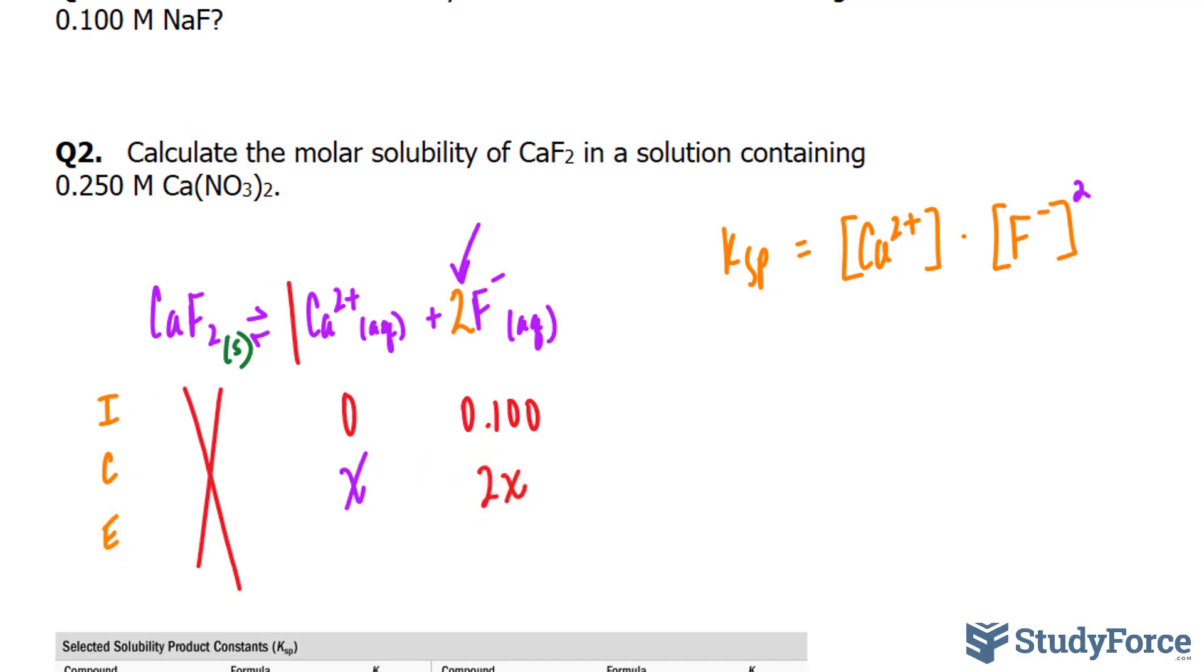To find E, we add I plus C together. So if I add these two together, I end up with X. If I add these two together, I end up with 2X plus 0.100.